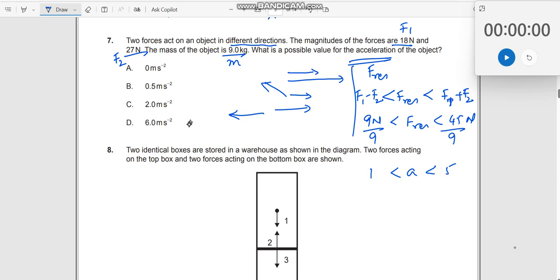Which of them could lie here? What is the possible value for the acceleration of the object? That is the question. 0 is not possible. It does not lie in this interval. 0.5 not possible. 2 will lie in this interval. C is the right answer. 6 is also not. It does not lie in this interval. So, it is also incorrect.